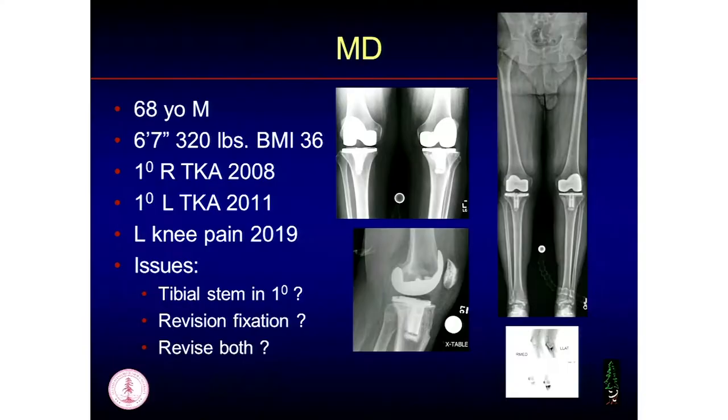Would you cement the entire stem, or leave it cementless and engage the diaphysis? The Mayo technique of fully cementing a shorter stem — I probably would not do here. I'd use a longer press-fit stem — the one indication I have for a press-fit stem. Most revisions I do now I do with a short fully cemented stem, bone plug, and a cone. But here I really want a long press-fit stem to keep me in the right alignment and protect the cone. It's a narrower stem — like 10 or 11 millimeter diameter — to avoid end-stem pain.